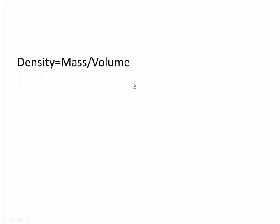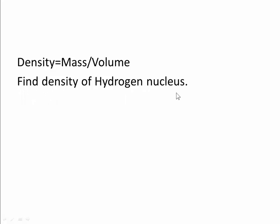Density is equal to mass divided by volume. Find the density of a hydrogen nucleus. You know the mass of a proton is 1.673 times 10 to the minus 27 kilograms. The Fermi radius is 1.2 times 10 to the minus 15 meters.